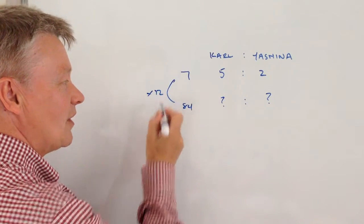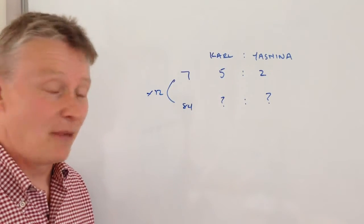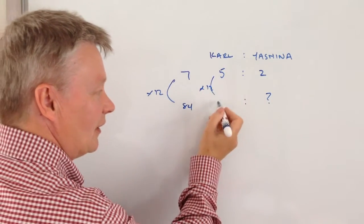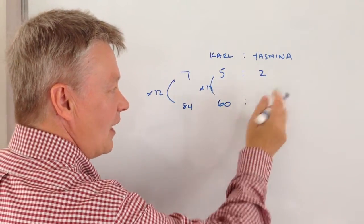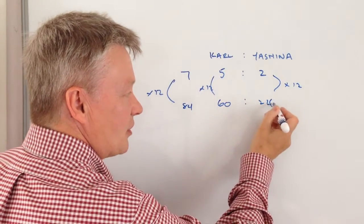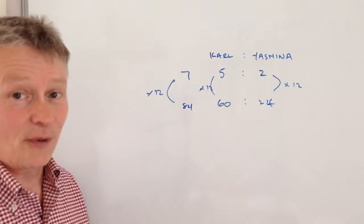So in other words they're 12 times older so that means then that we have to just multiply each of these by 12 so therefore Carl is now 60 and Yasmina is 24 and that actually answers this particular question.